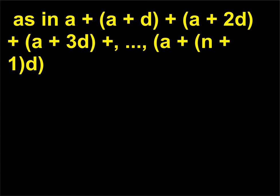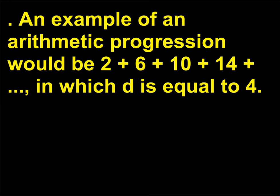As in a + (a+d) + (a+2d) + (a+3d) + ... + (a+(n-1)d). An example of an arithmetic progression would be 2 + 6 + 10 + 14 + ..., in which d equals 4.